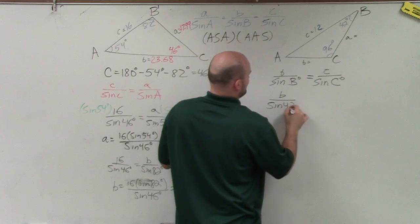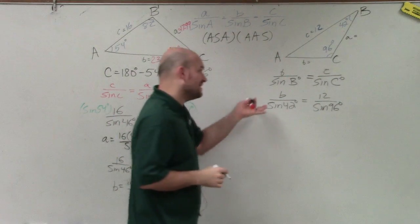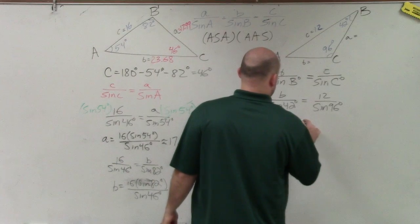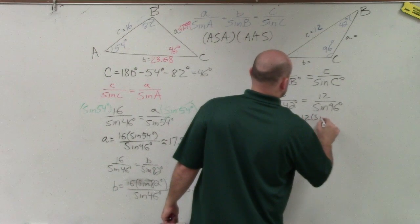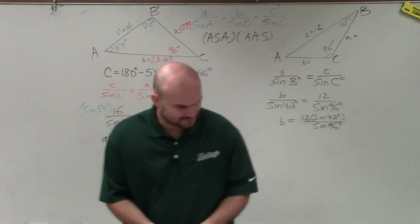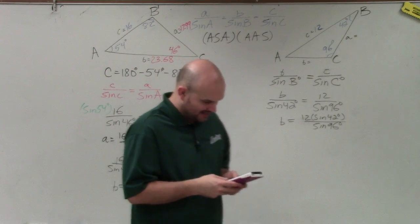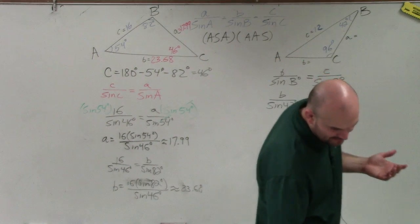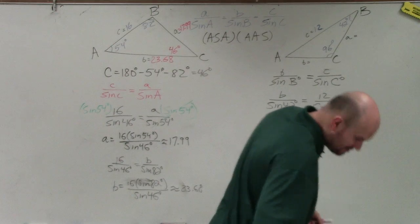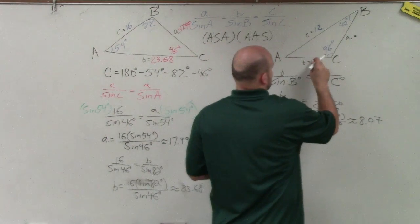So b over sine of 42 degrees equals 12 over sine of 96 degrees. To solve for b, multiply both sides by sine of 42, giving b equals 12 times sine of 42 degrees, all over sine of 96 degrees. Going to my calculator: 12 times sine of 42, divided by sine of 96, gives 8.073. Rounding to the nearest hundredth, b is approximately 8.07.